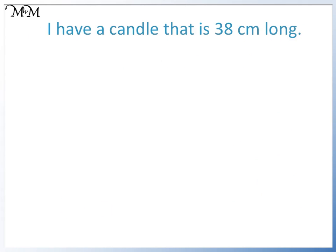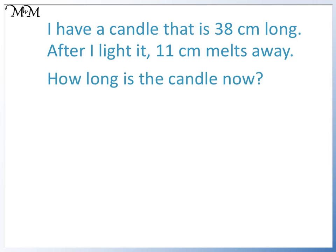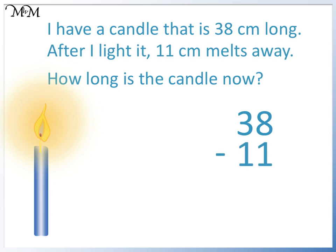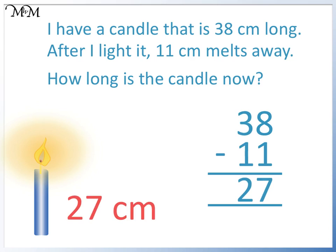I have a candle that is 38 centimetres long. After I light it, 11 centimetres melts away. How long is the candle now? We start at 38 centimetres long and 11 centimetres melts. This means that we take away the length of 11. It will get shorter. To see how long the candle is now, we will subtract 11 from 38. 8 take away 1 equals 7 and 3 take away 1 equals 2. It is now 27 centimetres long.